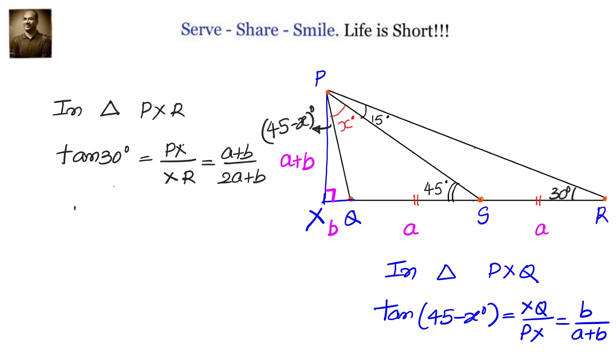Now the logic is, we know tan 30 is 1 by root 3 and that equals A plus B by 2A plus B. Now taking this equation, can I get the value of B by A plus B? If I am able to get it, then I can equate it to tan of 45 minus X. I can easily calculate what is the value of X from there.